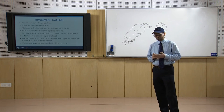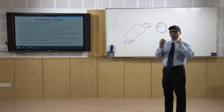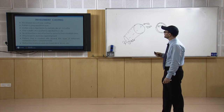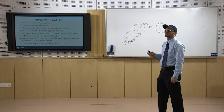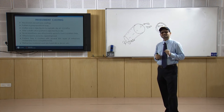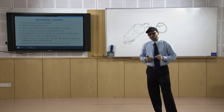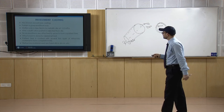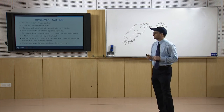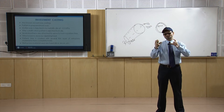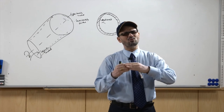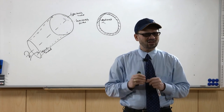Next is investment casting, used for making very intricate shapes of castings. This is also known as lost wax casting when wax is used as the material. The concept is based on the fact that the pattern material will be removed — the pattern material may be wax or polystyrene. A pattern is made by injecting wax under pressure in a machine.